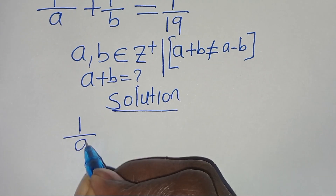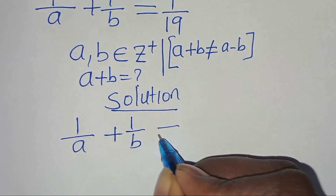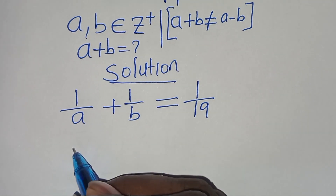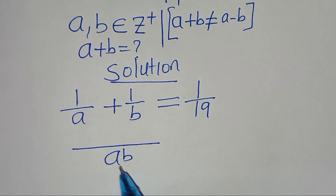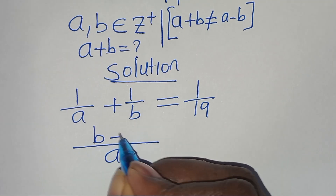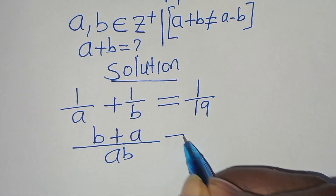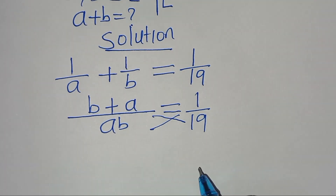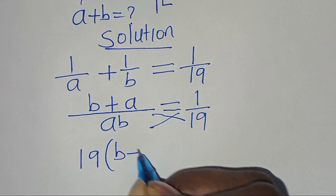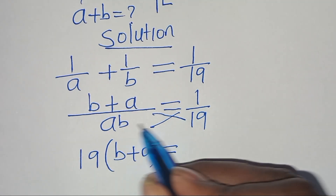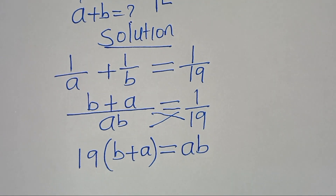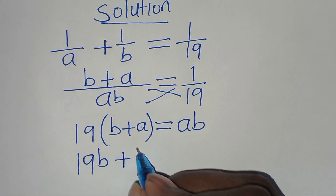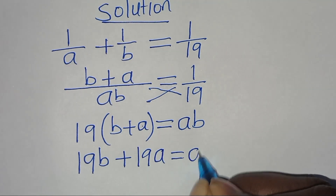We have 1 over a plus 1 over b equals 1 over 19. From the left-hand side, the LCM is ab, so we get (b plus a) over ab equals 1 over 19. Cross-multiplying gives us 19 times (b plus a) equals ab, which expands to 19b plus 19a equals ab.